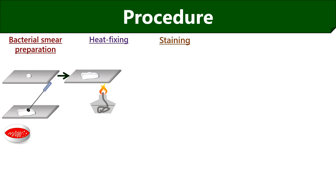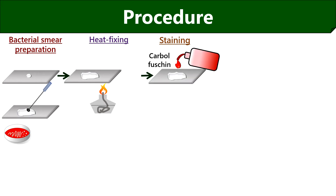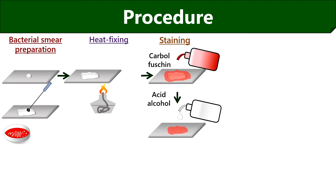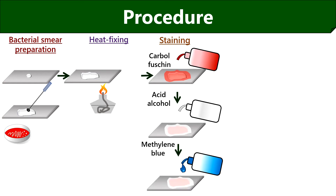In the staining procedure, first flood the smear with carbolfuchsin stain and after 30 to 60 seconds, wash the stain using distilled water. Then flood the smear with acid alcohol and after some time, wash the slide using distilled water. After that, flood the smear with methylene blue, wait for some time, and again wash the slide.